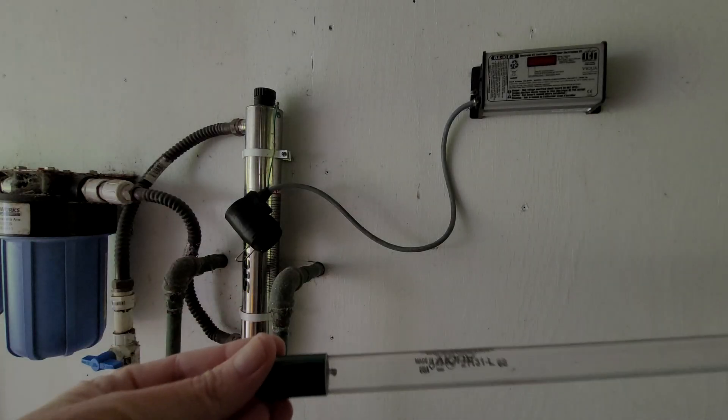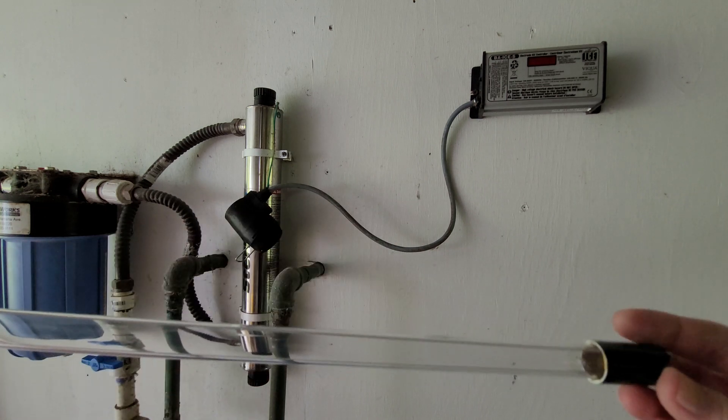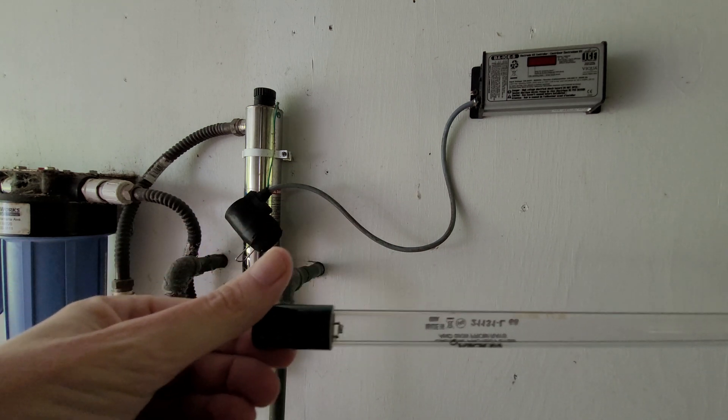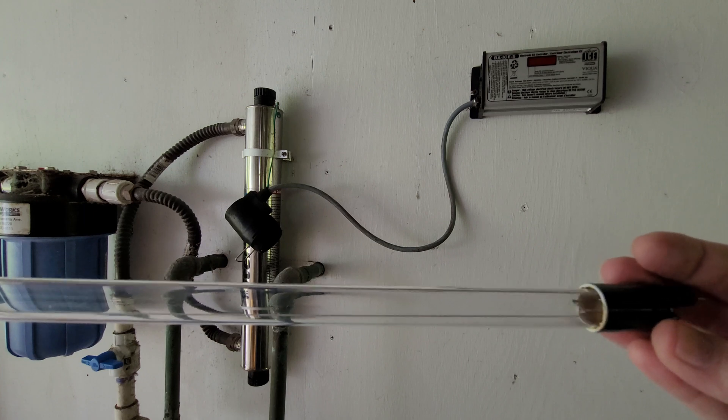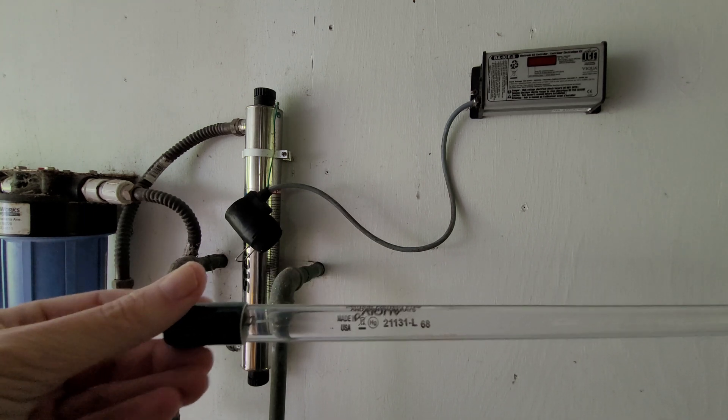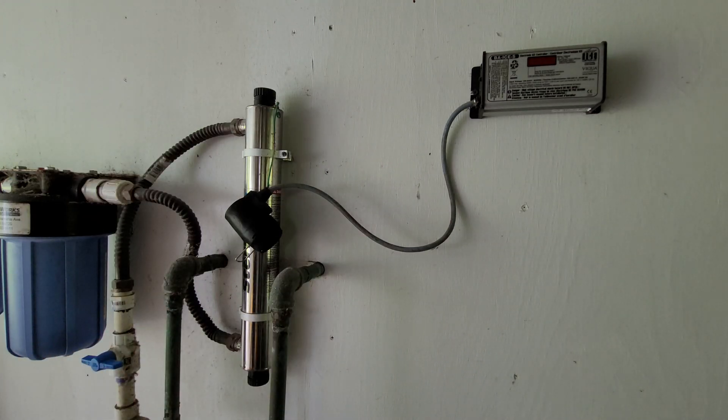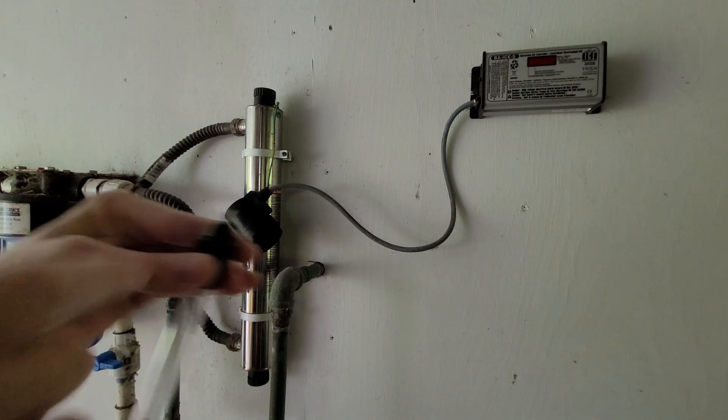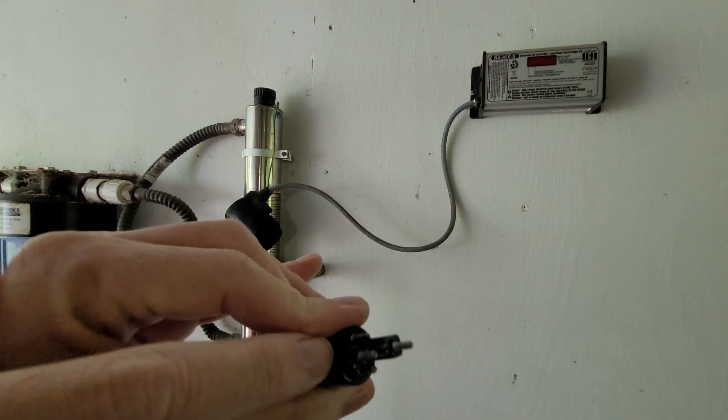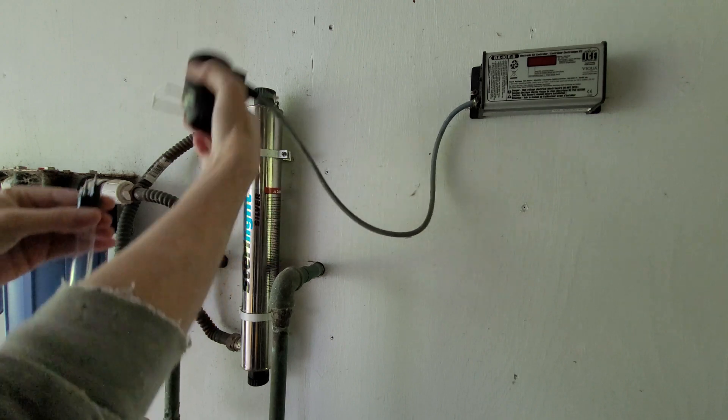Now one thing about these bulbs is you want to keep in mind when handling them, handle them by the green ends, don't touch the glass. Fingerprints or skin oil or any type of other oil or contaminant on the glass can cause the glass to crack once it's been energized and heated.